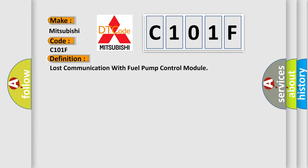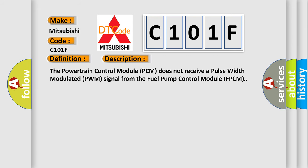And now this is a short description of this DTC code. The powertrain control module (PCM) does not receive a pulse width modulated (PWM) signal from the fuel pump control module (FPCM).